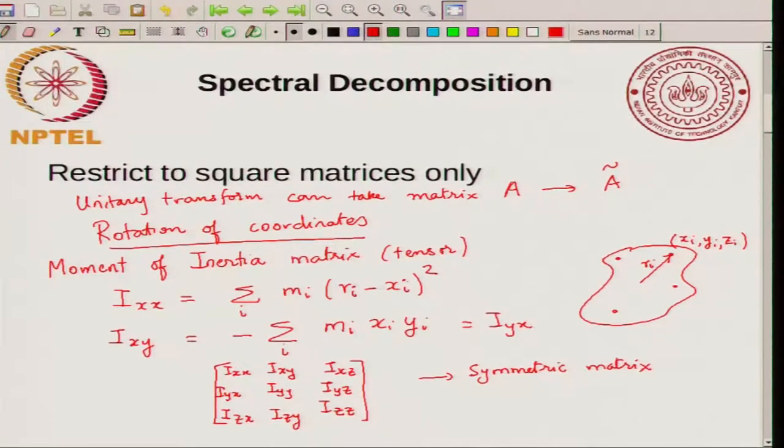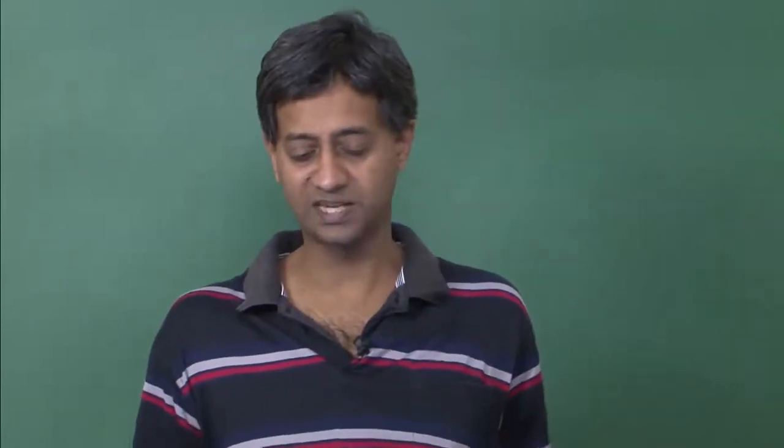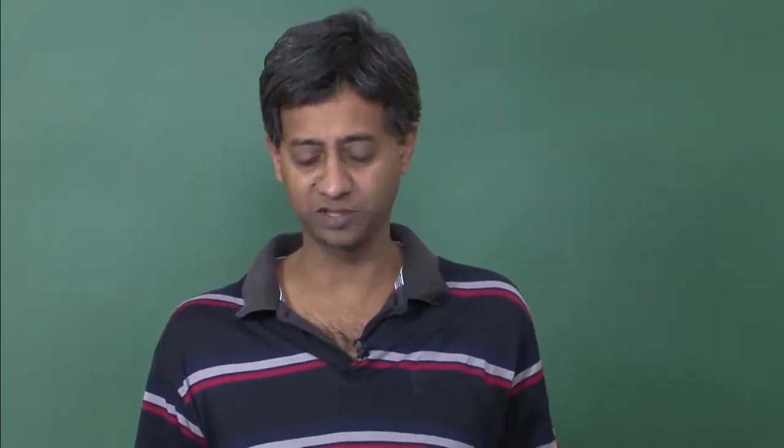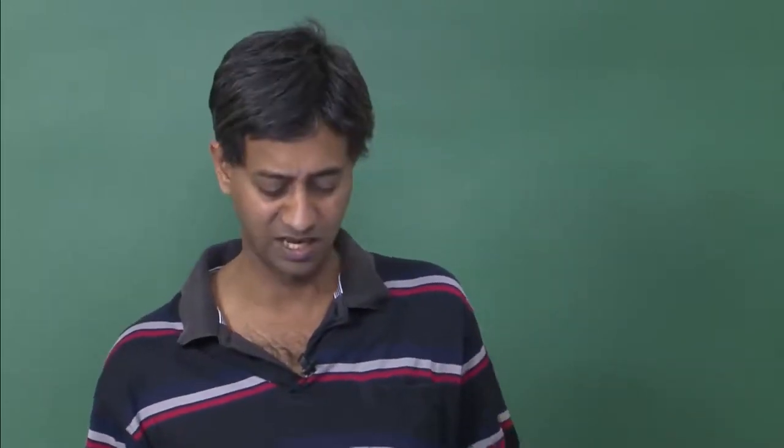Clearly you can see that I_xy equals I_yx, therefore the matrix is symmetric. This moment of inertia tensor appears naturally when you are writing out the rotational Hamiltonian for a polyatomic system.